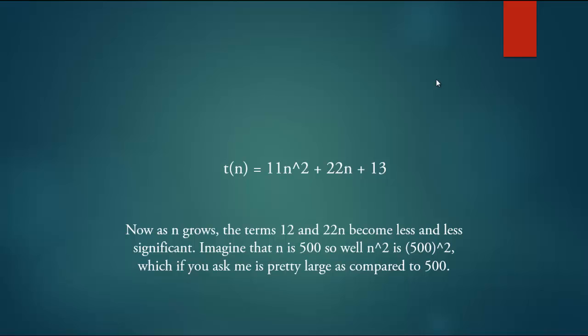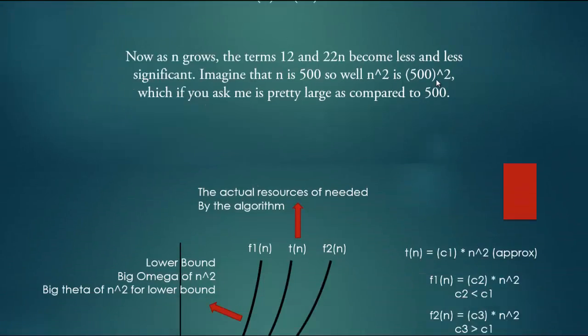Imagine that n is 500, so well n² will be 500 squared, which if you ask me is a pretty large number as compared to 500. So you can now say that T(n) is approximately equal to 11n², which has 11 and that is just a constant. So we can say again that T(n) is equal to c1 times n², where c1 is a constant.